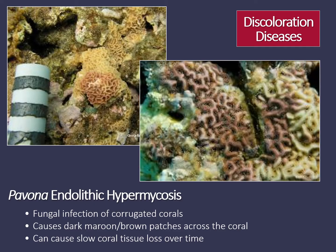A less common disease that creates coral tissue discoloration is Pavona endolithic hypermycosis. This disease is caused by the infection and overgrowth of a certain type of fungus that grows within the coral tissue, resulting in dark, maroon-colored patches across the coral colony surface. This disease isn't known to cause widespread coral damage, but is currently poorly understood.